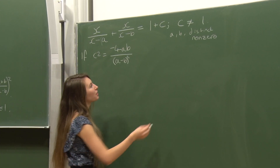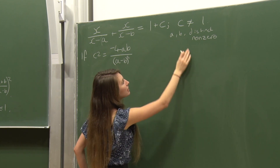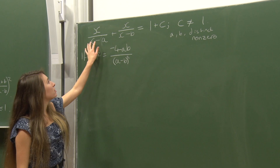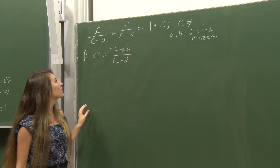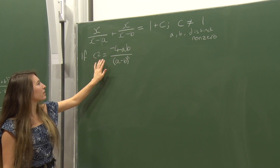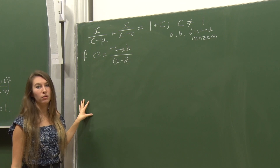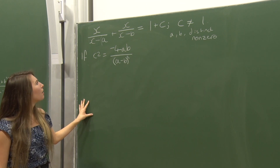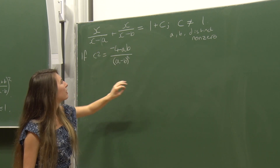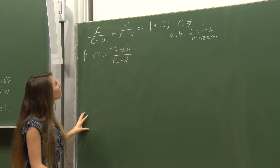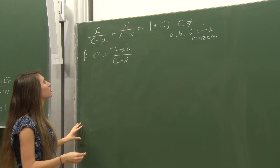Now we're asked: given another real number c which can't be 1, with a and b still distinct non-zero reals, if this new equation — the same as before but with c on the right side — has exactly one real solution when c² = -4ab/(a-b)². This looks messy to just plug in, so I'll leave c as is for now, work through to find when there's one real solution, and then verify it matches.